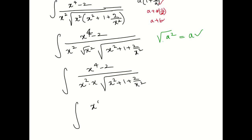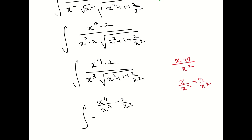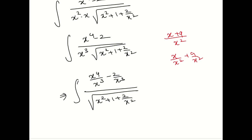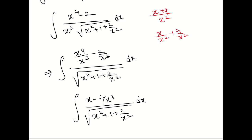So we get (x⁴ - 2) over x³ into root of (x² + 1 + 2/x²). I'll bring x³ into the numerator by splitting: x⁴/x³ minus 2/x³, which gives x minus 2/x³ in the numerator. The denominator remains root of (x² + 1 + 2/x²). Don't forget dx throughout.